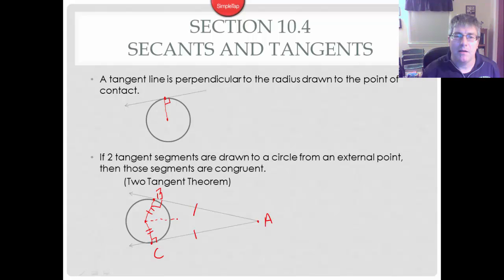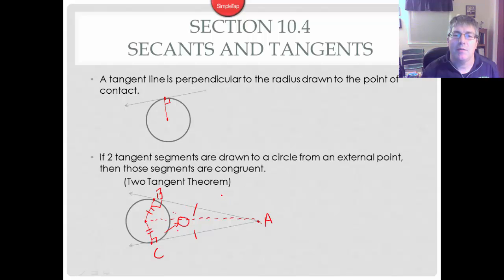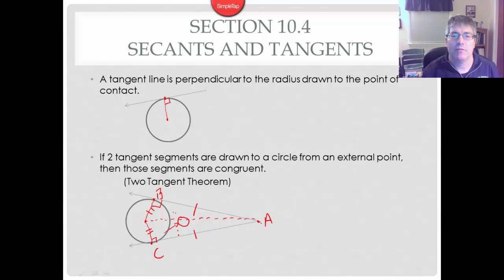If we insert an auxiliary line to point A, that line is reflexive, and it's also the hypotenuse because it's opposite the right angle. So these two triangles are congruent by HL, which makes AC congruent to AB by CPCTC. So there's a quick and easy proof of the two tangent theorem — two tangent segments drawn to a circle from an external point are congruent because we can split that into congruent triangles and use CPCTC.